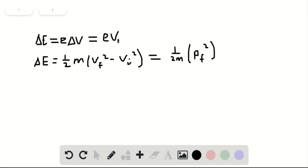Setting these two equations equal and solving for V1, we find that the potential is equal to P_f² divided by 2mE, where m is the mass of the electron and E is the charge of the electron.